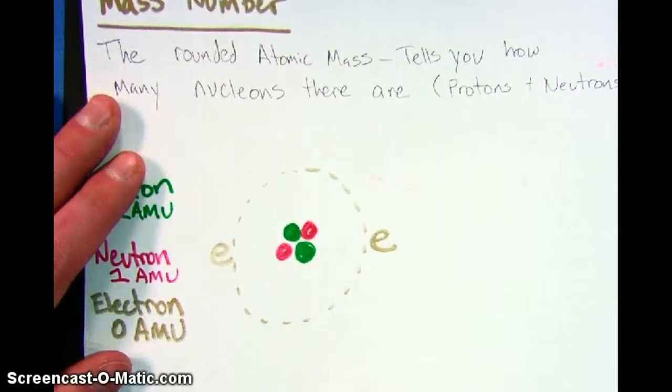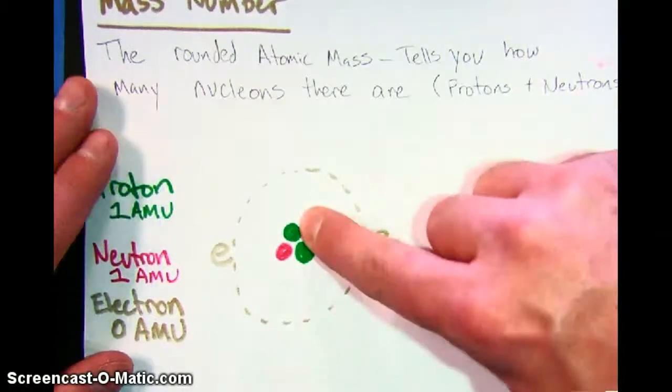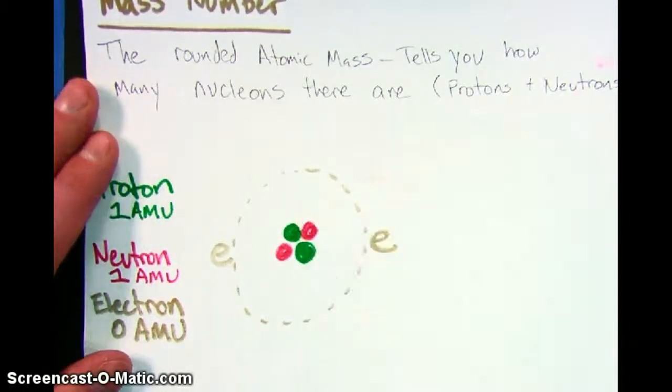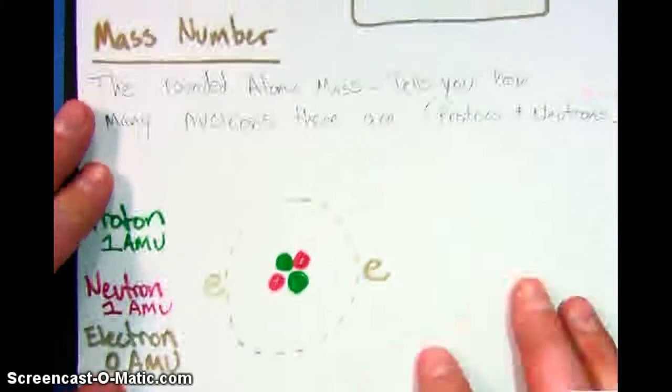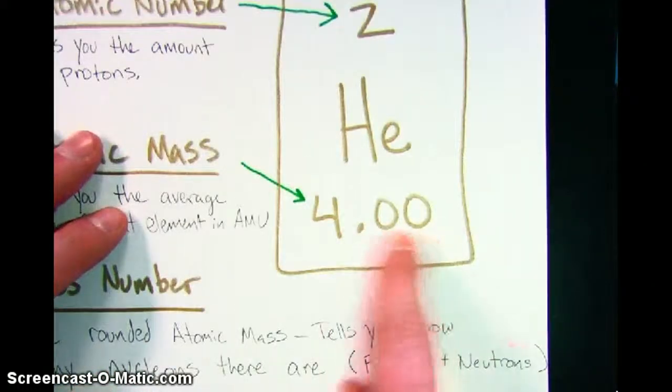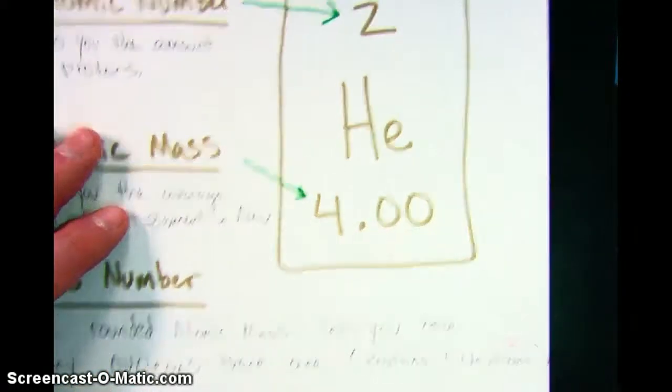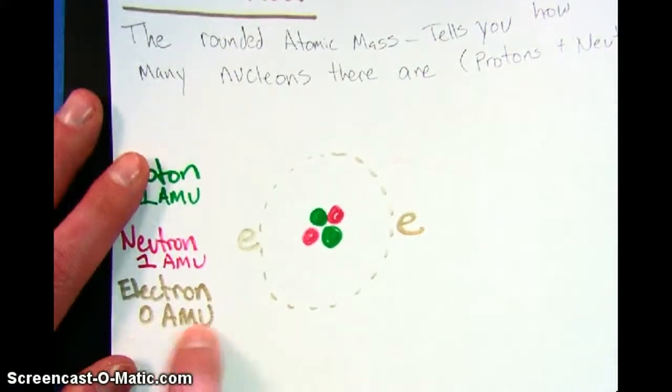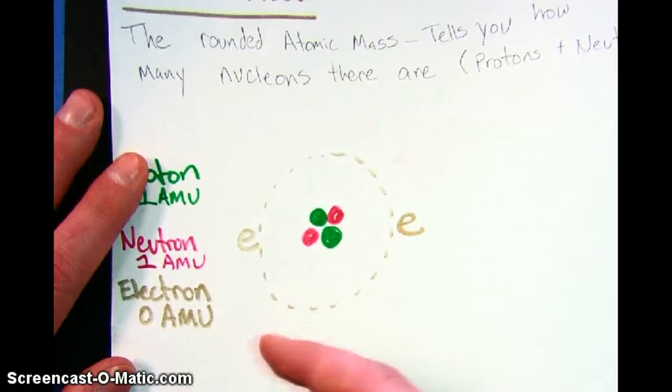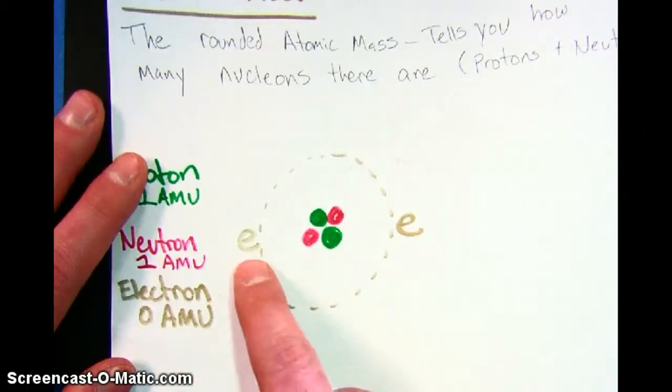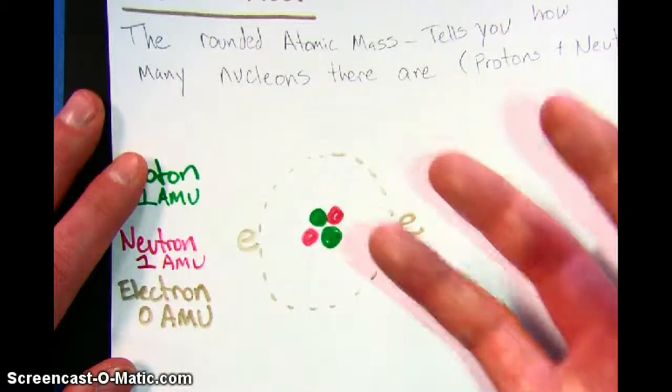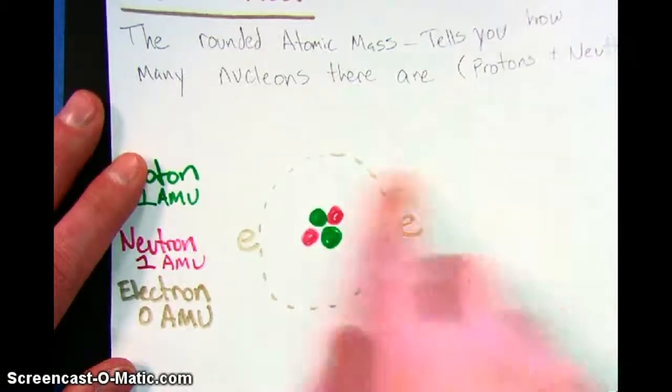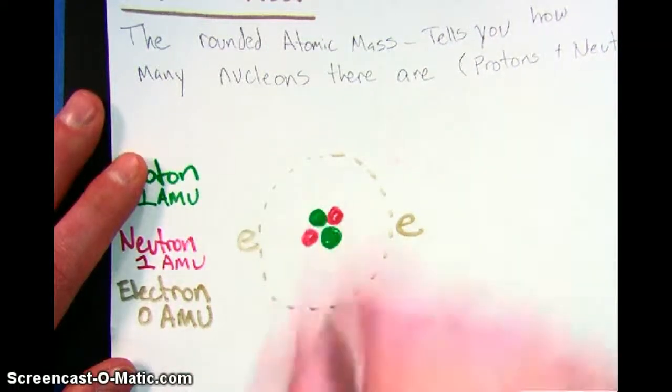We're going to talk about in a later video how if you have less or more neutrons than that, that's how you get the averages that make these decimal places different. The last thing is electrons. Electrons have zero AMUs. That doesn't mean that they have no mass. It's just that the mass of an electron is so small that we just kind of round it out. Compared to the protons and neutrons, it doesn't even have an effect.